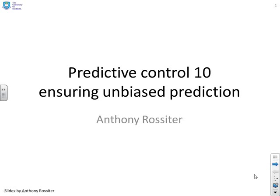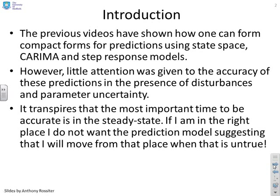This video looks at unbiased prediction. The previous videos have shown how you can form compact forms for predictions using states-based GRIMA or step-response models. However, we gave very little attention to the accuracy of these predictions in the presence of disturbances or parameter uncertainty.